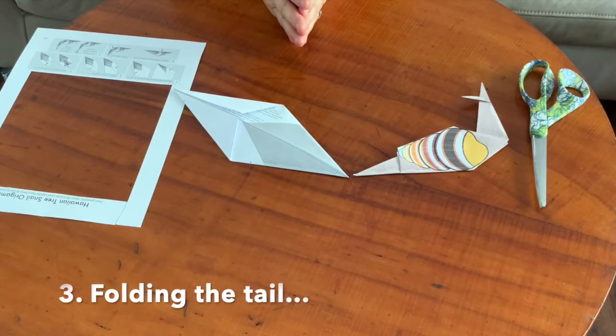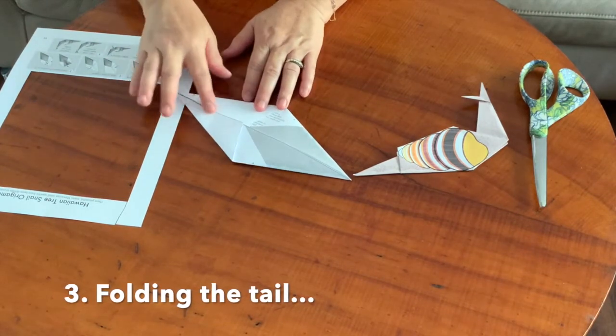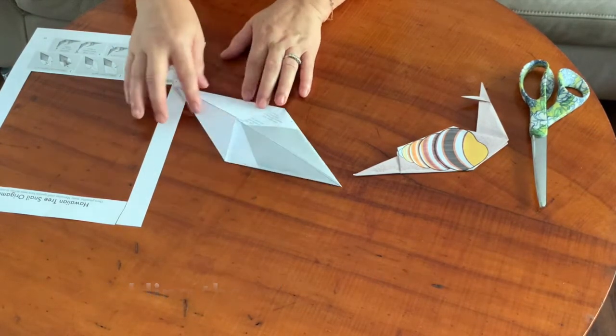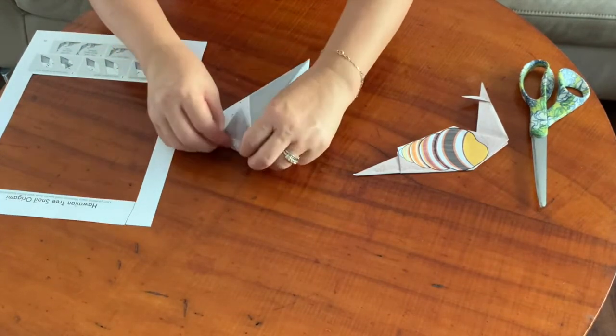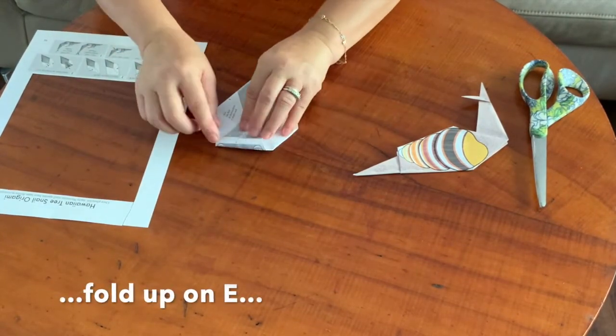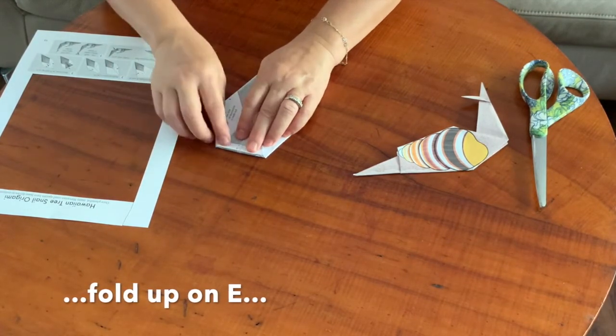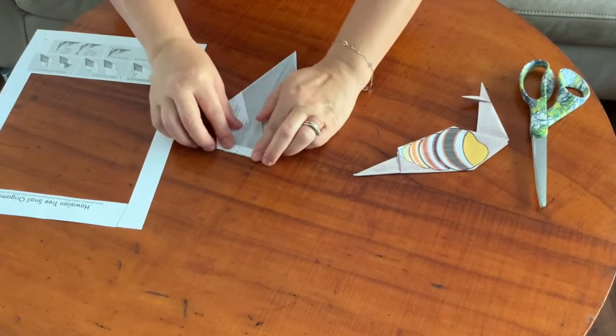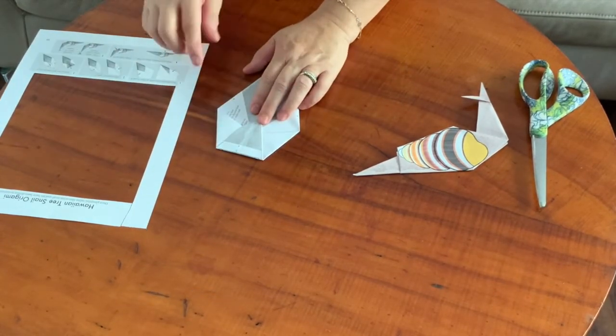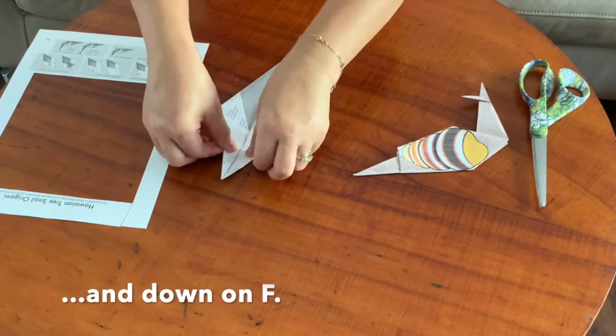Now we are going to create the tail. On this blank side, not the printed side because this side will be the head, fold it up. As you fold it up, you're going to see there's a little white area. This will help you create the tail, so fold it up along that line E and then fold it back down along that line F. So you're creating kind of like an accordion fold.